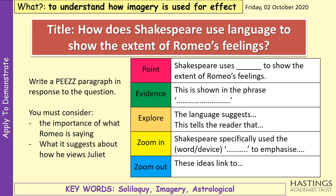To finish off the lesson, I'd like you to write a paragraph in response to the question: 'How does Shakespeare use language to show the extent of Romeo's feelings?' You can go back through this video to find your quotes — the whole scene is on the video. Find a good quotation that shows Romeo's feelings, perhaps from the first part of the scene where Romeo is just talking about Juliet. Use the sentence starters on the screen. Pause the video now and do that.